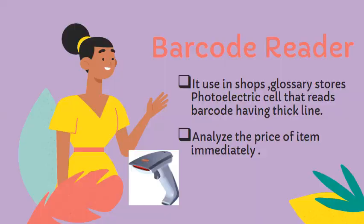Barcode reader is normally used in shops, grocery stores, etc. This contains photo-electrical cells that read barcodes consisting of lines having different thicknesses. We see shopkeepers use it to find the price of an item immediately.